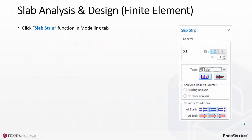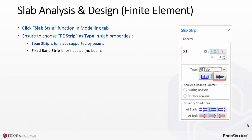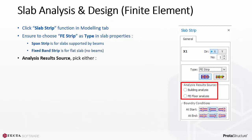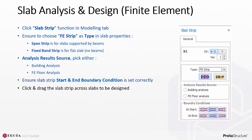Click the Slab Strip function in the Modeling tab. Ensure to choose FE Strip as the type in slab properties. Span Strip is for slabs supported by beams; Fixed Band Strip is for flat slabs with no beams. Under Analysis Result Source, pick either building analysis or FE floor analysis. Ensure the slab strip start and end boundary conditions are set correctly.